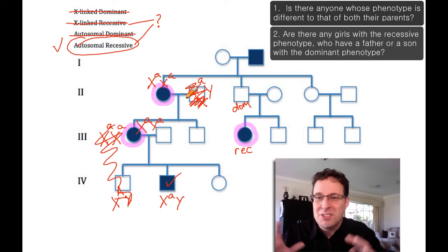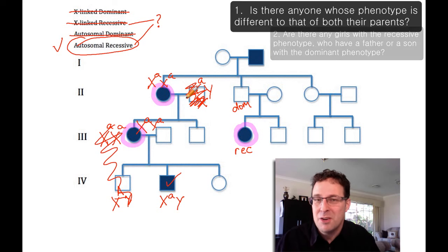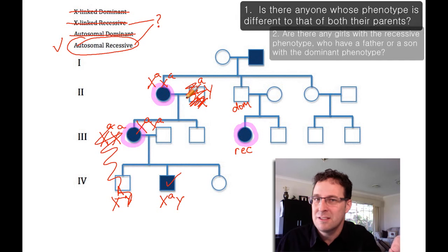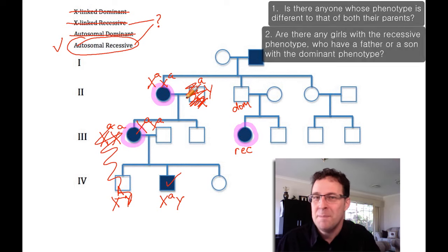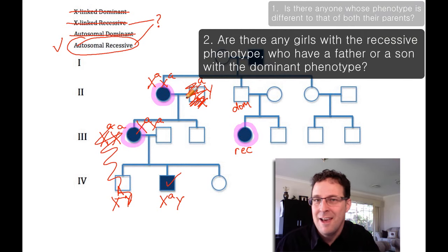So we've been able to solve this pedigree, work out that it must be a recessive trait, because there's at least one person in the pedigree who has a phenotype that's different to both their parents. And then we've been able to prove that it can't be X-linked because we've found girls who have the recessive trait who have either a father or a son that doesn't have the recessive trait or that has the dominant trait.